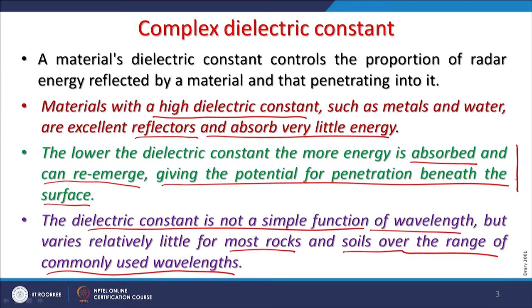The properties of metals or water can be exploited. If metal corner reflectors are not available, a small calm water body that reflects maximum microwave energy can also be used as a ground control point (GCP) for georeferencing. This works because water absorbs very little energy — lower dielectric constant materials allow more energy to be absorbed and reemerge, giving potential for subsurface penetration.